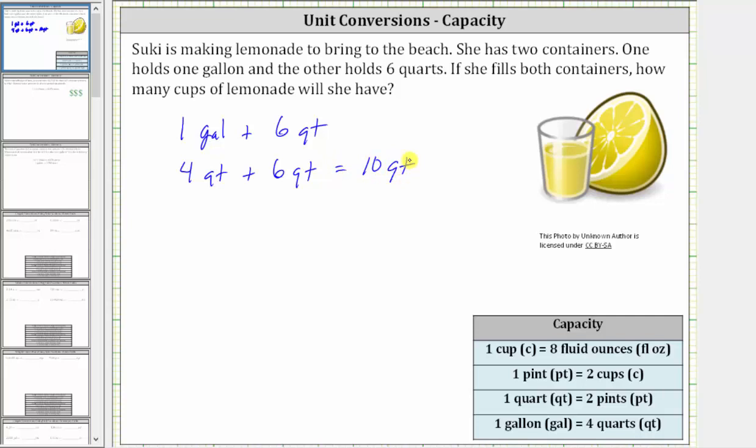And now she wants to know how many cups of lemonade she will have, which means we need to convert 10 quarts to cups. Let's first write 10 quarts as a fraction with a denominator of one. And now we will multiply by unit fractions to convert quarts to cups.